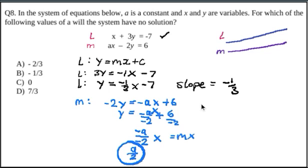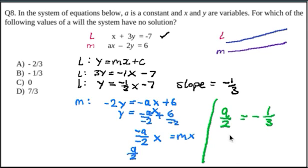Alright, so this slope is equal to this slope. So now we can solve for a. So let's solve for a. So we're going to go a over 2 is equal to minus 1 over 3. Let's multiply both sides by 2. So we get a is equal to 2 times minus 1 over 3. So we get minus 2 over 3. So our answer will be A.